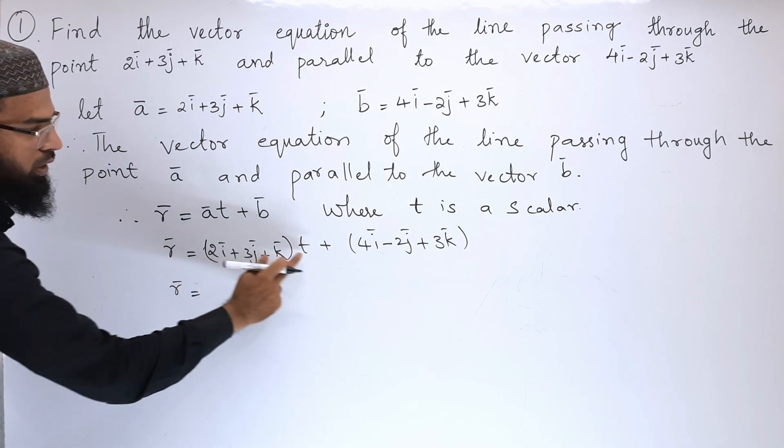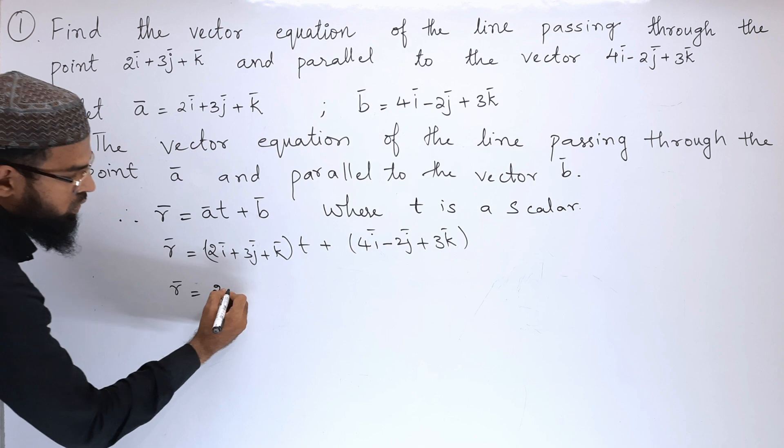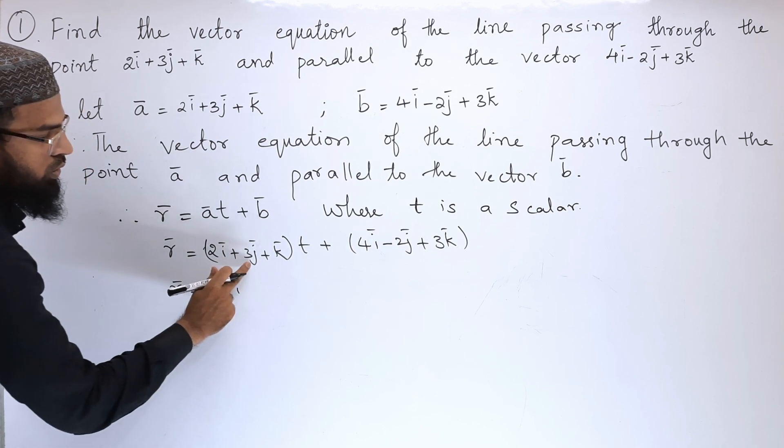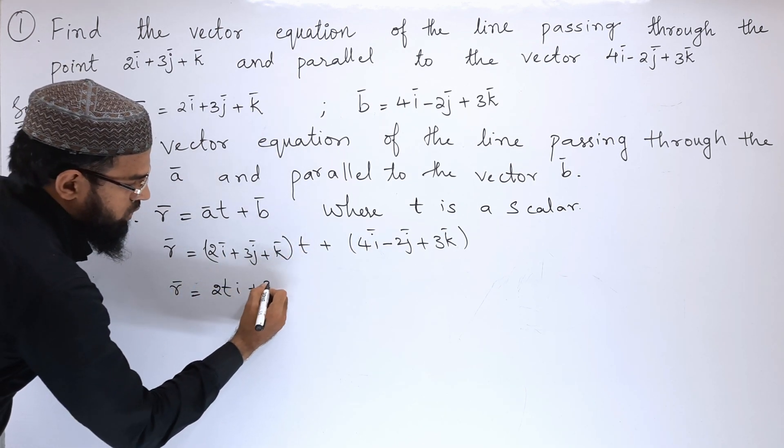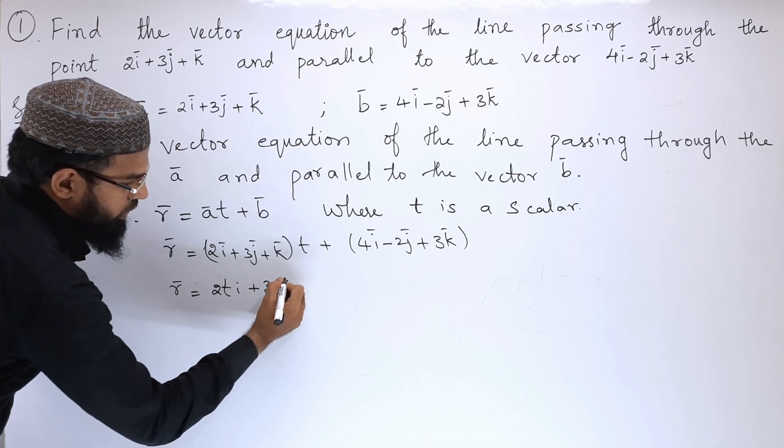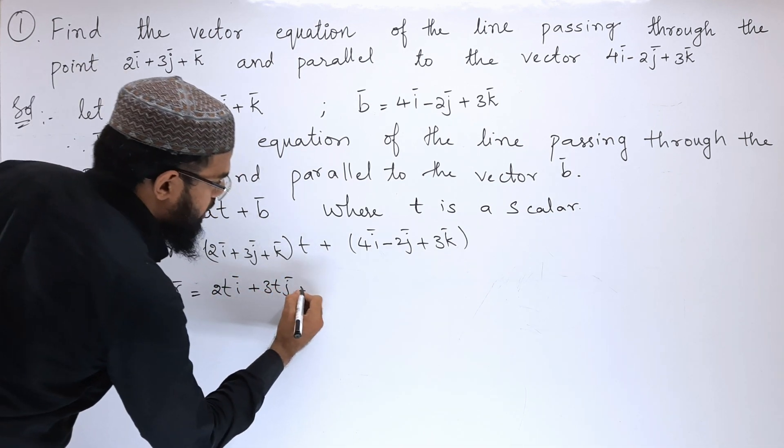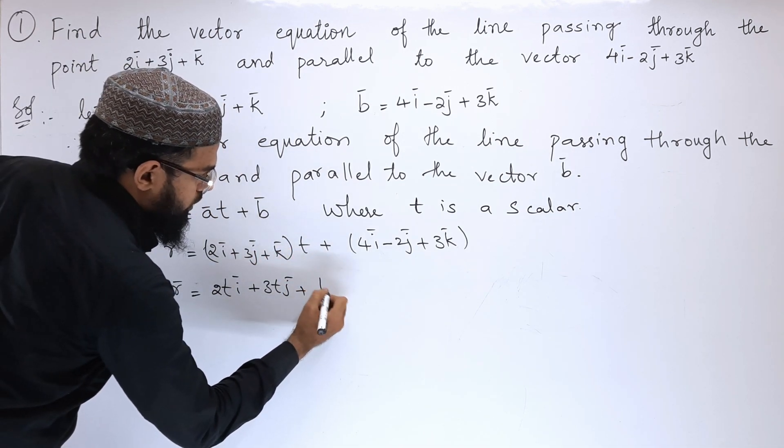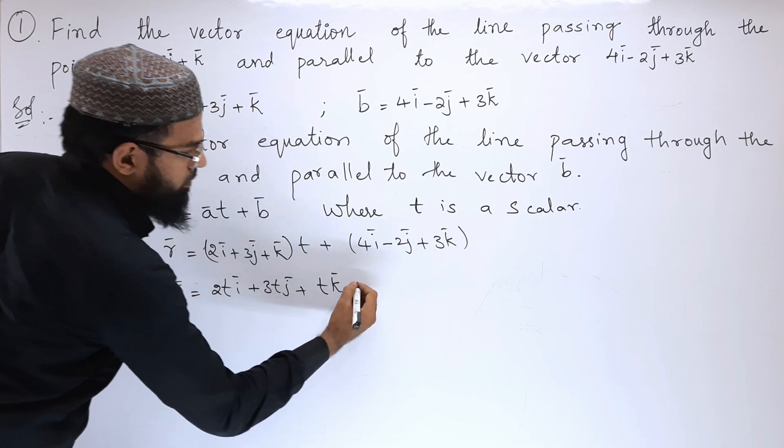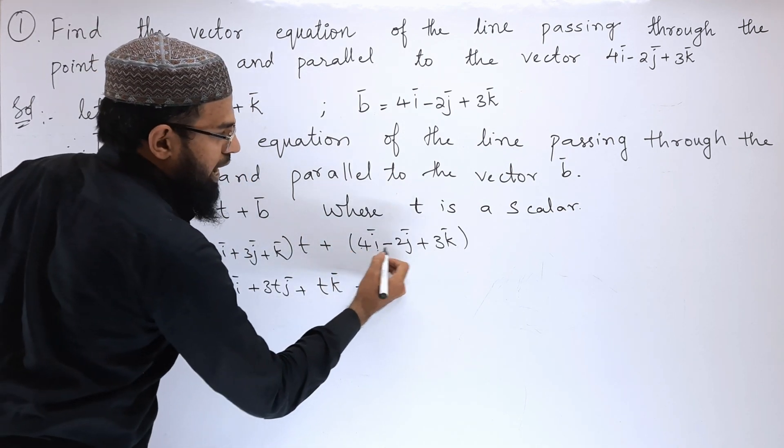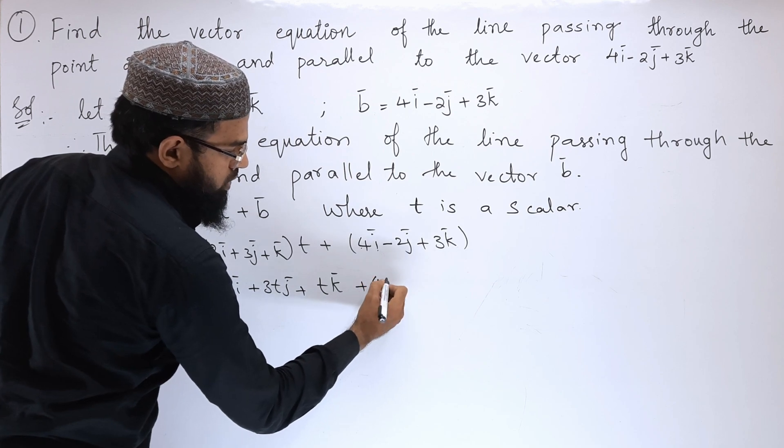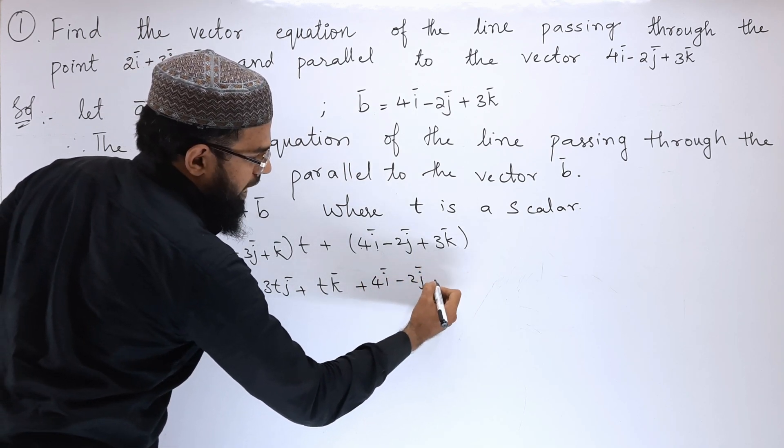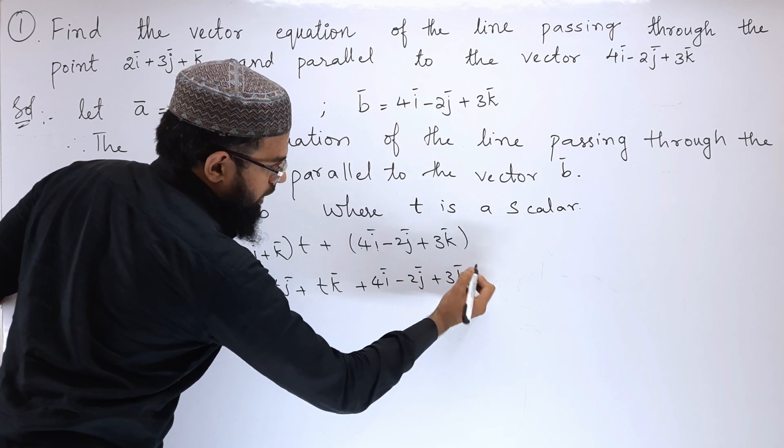2i into t, we can write 2ti, 3j into t, so 3tj, plus k into t, tk. 4i as it is, minus 2j cap plus 3k cap.